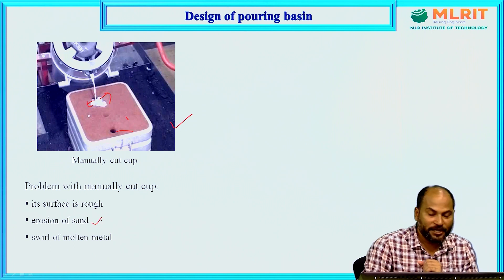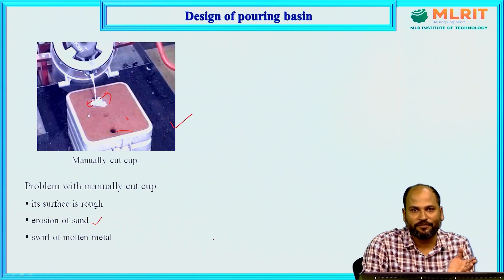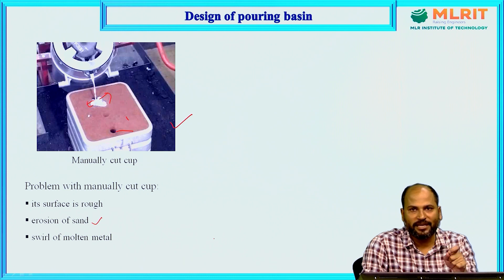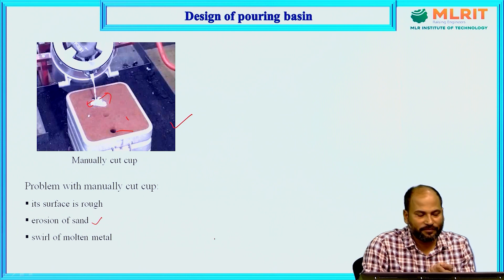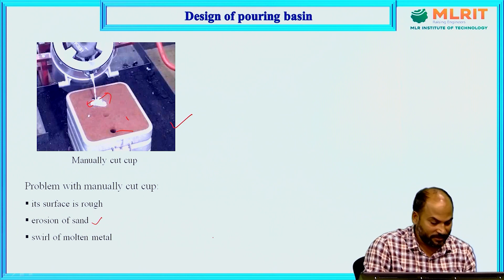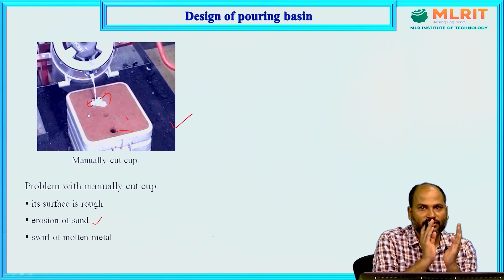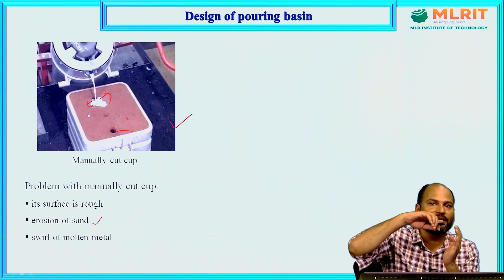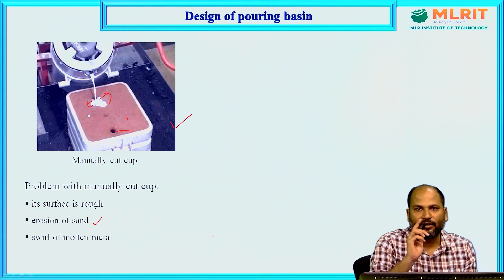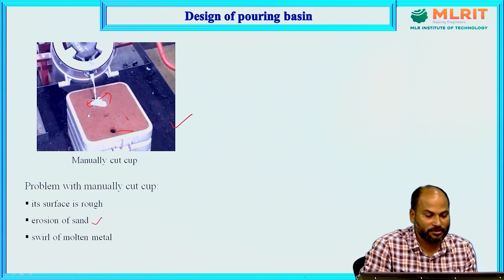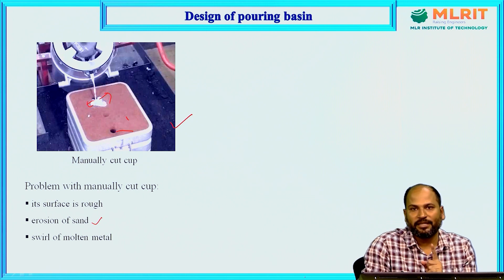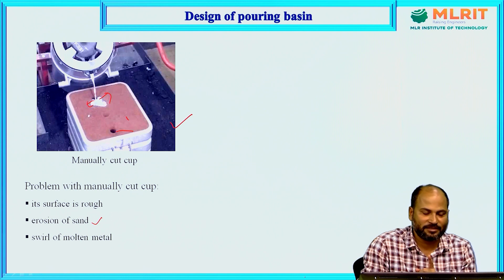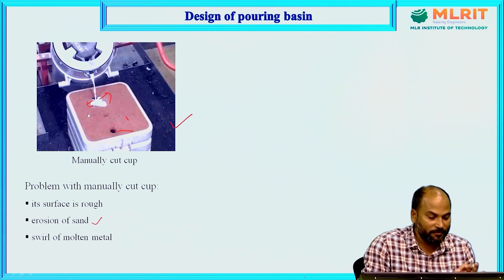Those eroded sand particles flow with the molten metal into the mould cavity and after solidification appear as defects in the casting. So the second problem is erosion of sand due to high frictional force. The third problem is that with a cylindrical cross section, a swirl or rotation effect occurs in the molten metal, causing turbulence that again creates problems in the casting. These are the three problems with a manually cut pouring basin.